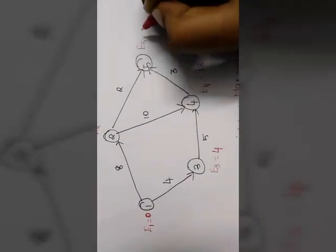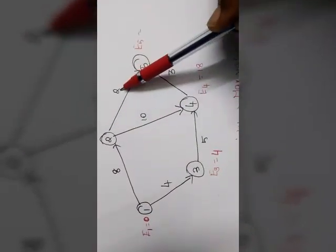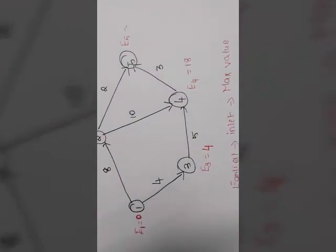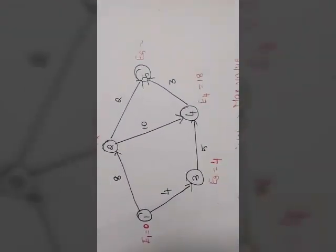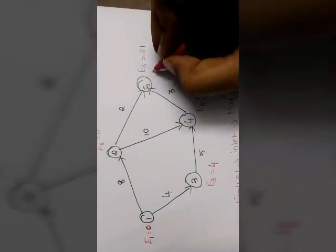So E5. For E5 also 2 inlet is there. 8 plus 2 is 10 and 18 plus 3 is 21. 18 plus 3 is 21. So 21 is maximum. So 21 will be your latest time.